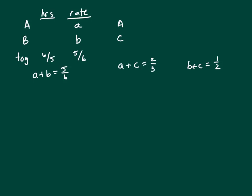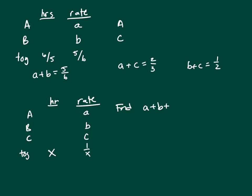So what we're trying to find is how many hours it takes pumps A, B, and C to fill the tank together. We're trying to figure out rate A, rate B, rate C, and this would be one over X. So I'm trying to find A plus B plus C equals one over X.